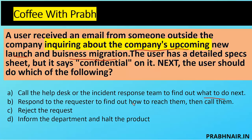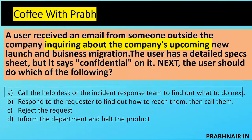Option B is respond to the requester to find out how to reach them — definitely not, until we verify. Option C is reject the request — but it might be an official call. Option D is inform the department holding the product — but I don't have authority. The first thing I will do is notify, since this might be a phishing email seeking my information. That's why the answer is A.